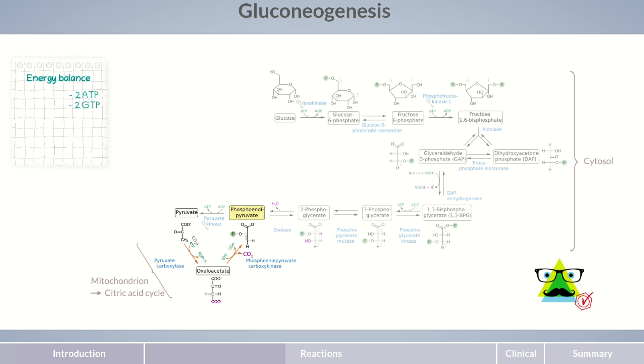The pyruvate carboxylase reaction, therefore, belongs to the replenishing reactions of the citric acid cycle, which are technically termed anaplerotic reactions. However, the formation of phosphoenolpyruvate and the gluconeogenetic reactions catalyzed by the reversible enzymes of glycolysis occur once again in the cytosol.